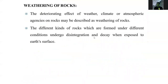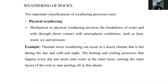Weathering of rocks: the deteriorating effects of weather, climate, and atmospheric agencies on rocks may be described as weathering. The different kinds of rocks which form under different conditions undergo disintegration and decay when exposed to the earth's surface. Two important classifications of weathering process exist. Physical or mechanical weathering involves the breakdown of rocks and soils through direct contact with atmospheric conditions such as heat, water, ice, and pressure. Thermal stress weathering can occur in a desert climate that is hot during the day and cold at night, putting stress on the outer layer of the rock and causing it to peel off in thin sheets.